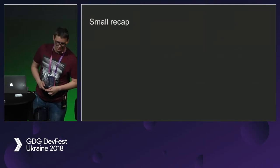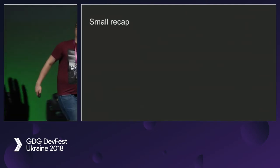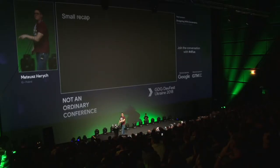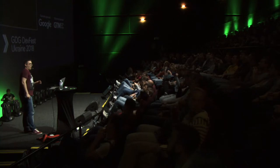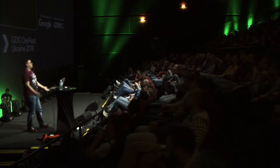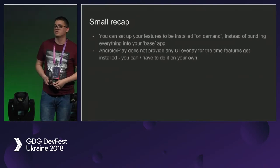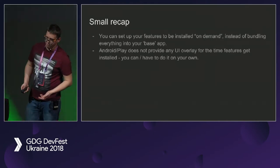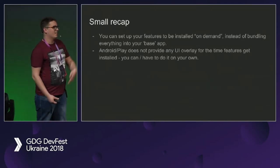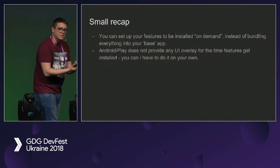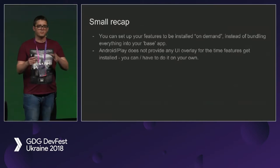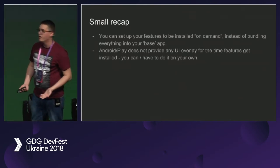Small recap of what app bundles are. Dynamic feature modules mean you can set up particular features to be installable on demand, reducing APK size. Google Play doesn't provide any UI overlay at the time of module installation — you do it yourself, which is actually nice. During installation of a module you can display the same progress bar that would normally appear when loading data from the internet.